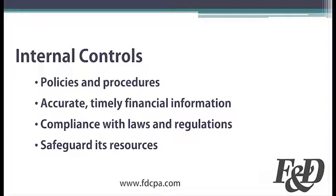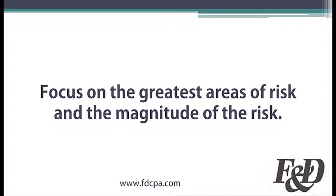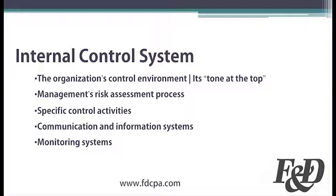In the development and implementation of internal controls, an organization should focus on the greatest areas of risk and the magnitude of that risk. It comes down to what could go wrong, and if it did, could it be material to the organization and its financial statements? After considering the risk elements and the likelihood of something going wrong, the organization should then look to its specific control policies and procedures to reduce that risk to an acceptable level.